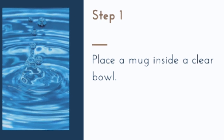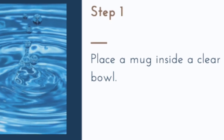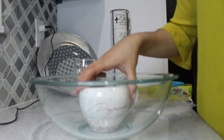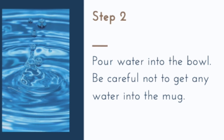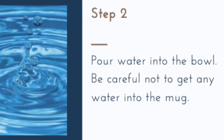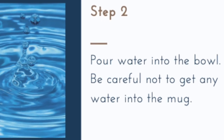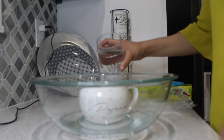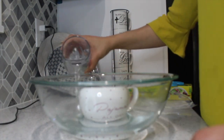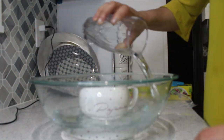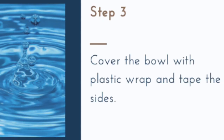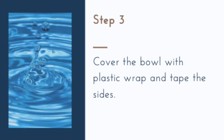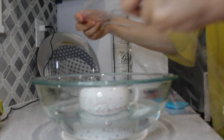First you want to place the mug inside of the clear bowl. Next you want to pour water into the bowl, but be very careful not to get any water inside the mug. Next you want to cover the bowl tightly with plastic wrap and tape down the sides.